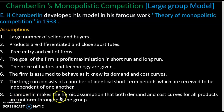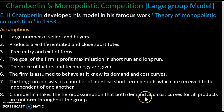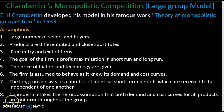The eighth and most important assumption: Chamberlain makes the heroic assumption that both demand and cost curves for all products are uniform throughout the group. This means the total demand in the market is shared equally — whether it is a shoe producer or a soap producer, all producers in the market face the same demand and cost conditions.